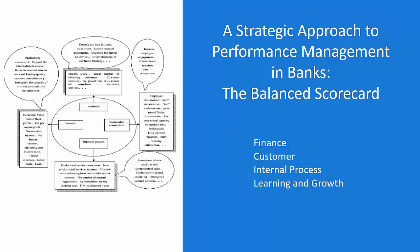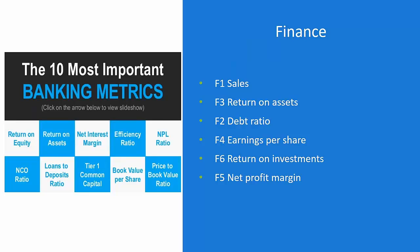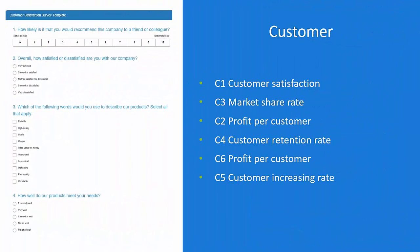We're going to talk about a strategic approach to performance management: the balanced scorecard. The concept is it's no longer measuring bank performance strictly by finance or GL measures. I need to put in customer measures, internal process measures, and employee learning and growth measures. On the finance piece: sales are typically measured in loan production — commercial loans, installment loans, home equity loans by branch and by officer. Return on assets, debt ratio, loan-to-deposit ratio, earnings per share — these normal financial ratios won't go away. You obviously need to know how your customers are doing.